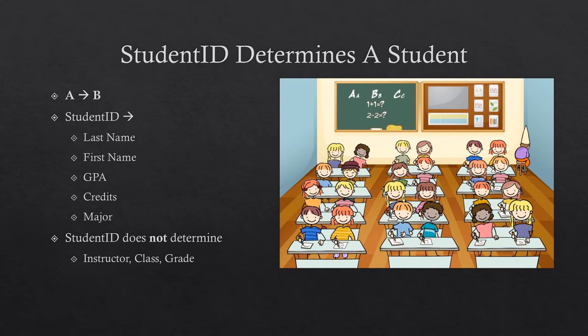Notice that the student ID does not determine a student's instructor, class, or grade, because a student can have more than one instructor, a student can have more than one class, and a student can have more than one grade because each class has its own grade.